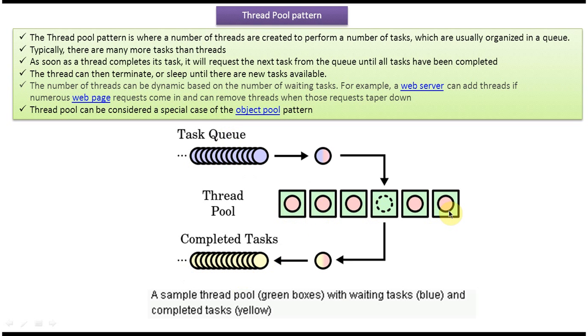So the ThreadPool is responsible for creating the threads. Each thread in the ThreadPool will take a task from the Task Queue and perform the task. Once the task is completed, it will send it to the Completed Task Queue. And then the Thread is free.